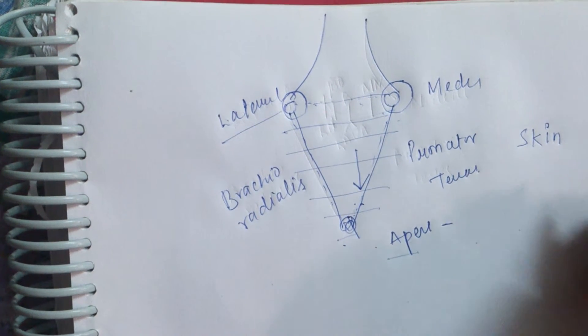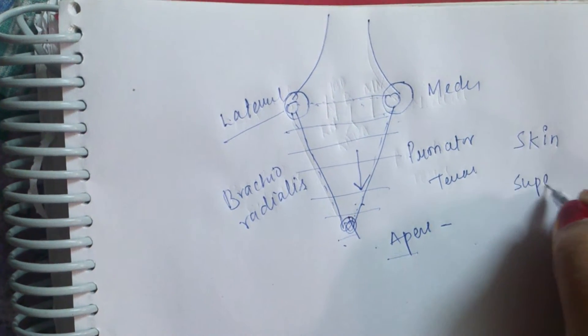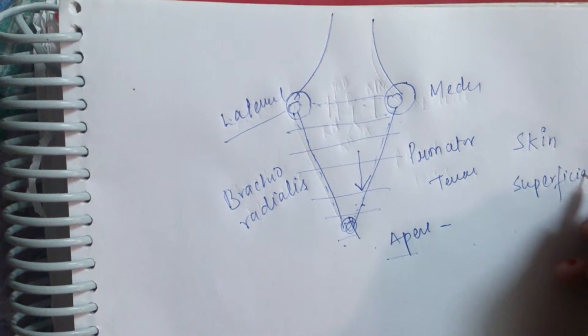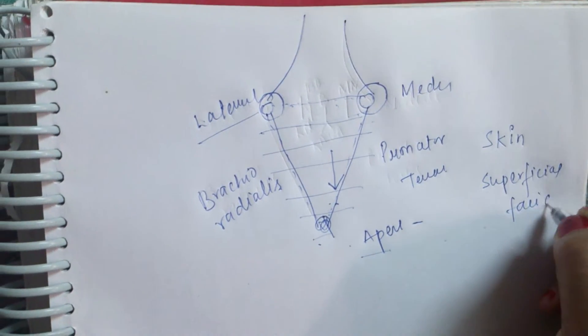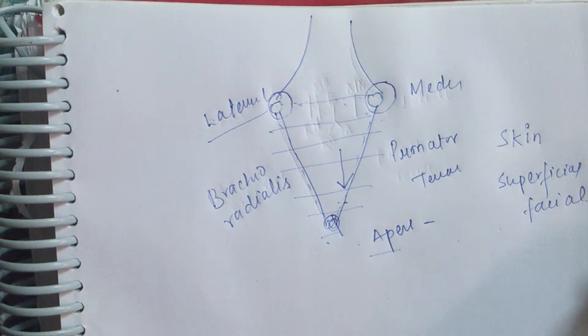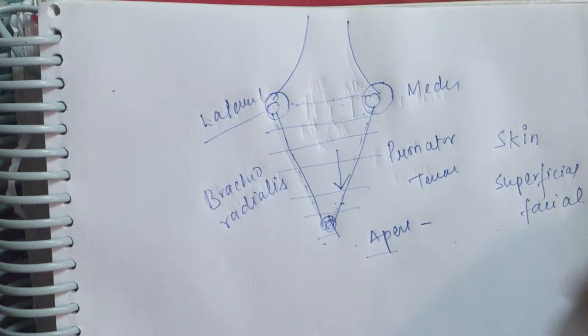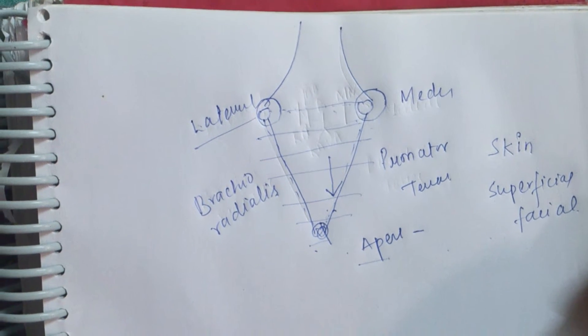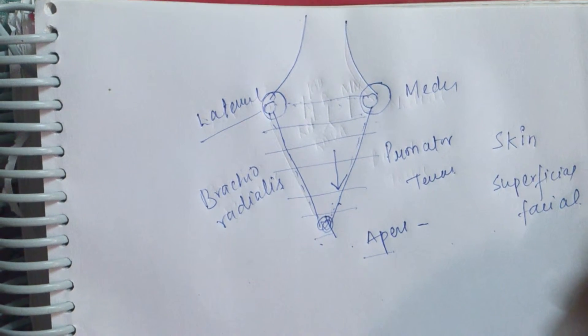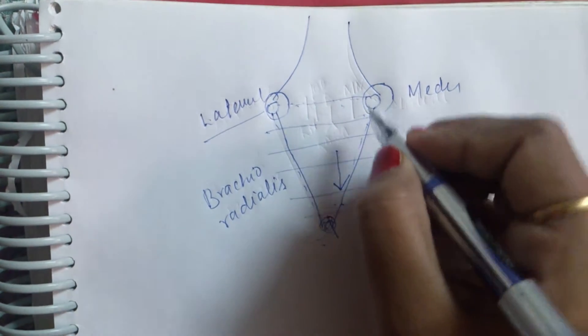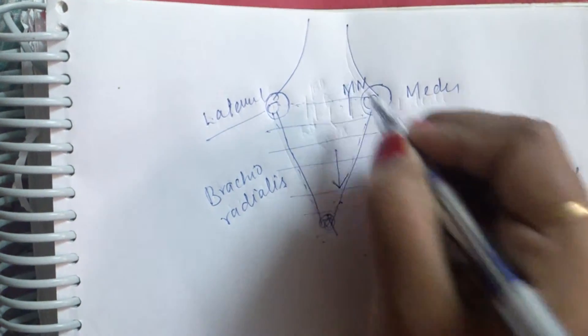This is the brachial artery. The superficial fascia containing the medial cubital vein and the lateral cutaneous nerve of the forearm and median cutaneous nerve of the forearm and deep fascia. This is the medial nerve.